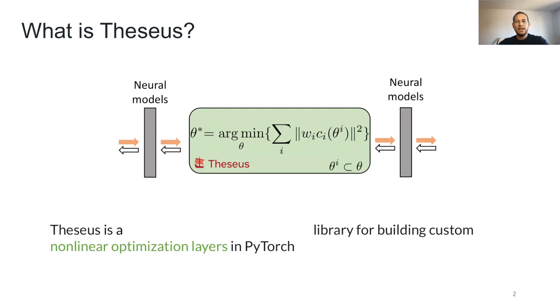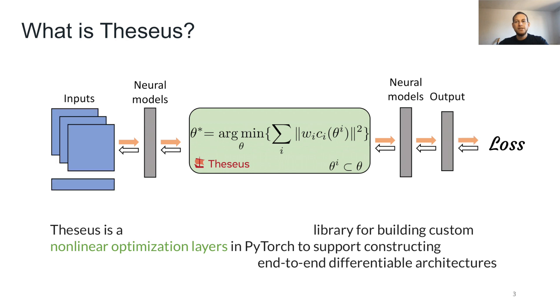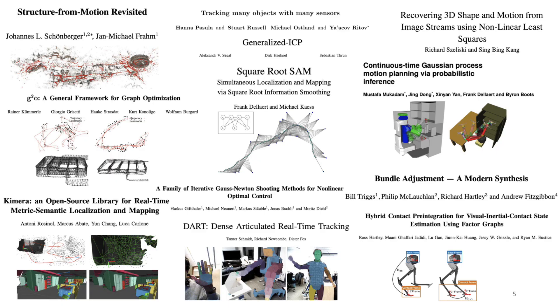Theseus is a PyTorch library that allows users to build custom nonlinear optimization layers, which can then be inserted into any neural architectures for end-to-end deep learning. Importantly, Theseus is able to do this through an application-agnostic interface that supports a variety of robotics and vision applications, and also with an efficiency-based design that results in state-of-the-art performance on compute and memory.